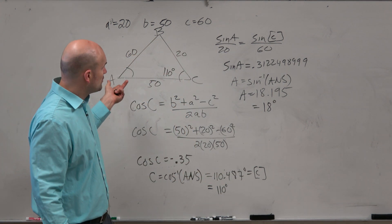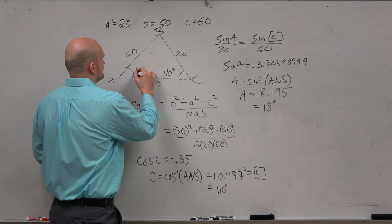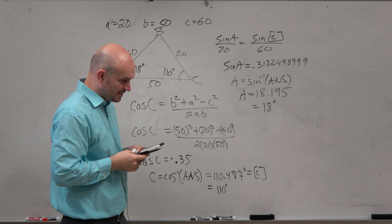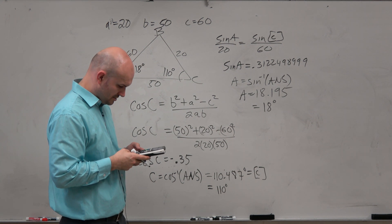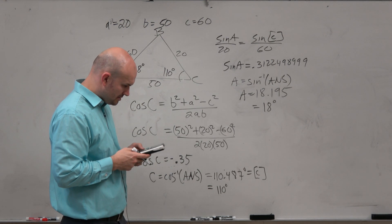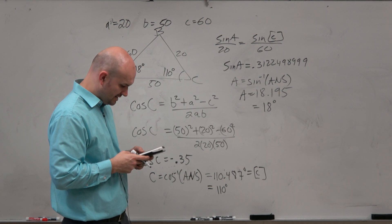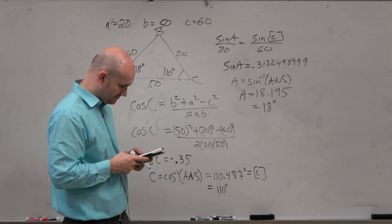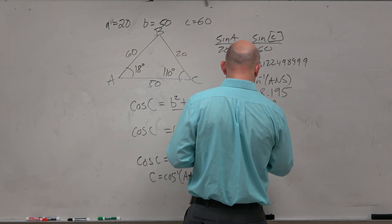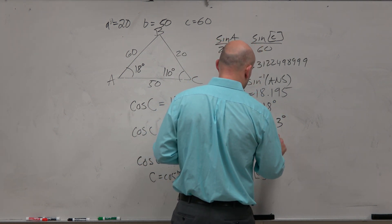Now should I do law of sines one more time to get B? Now we can just go ahead and subtract them. So in this case, what I'll do is I'll store this as alpha B. All right, so now I'm going to do 180 minus alpha C minus alpha B. And I get 51.3 degrees, so B equals 51.3 degrees, which is equal to 51 degrees.